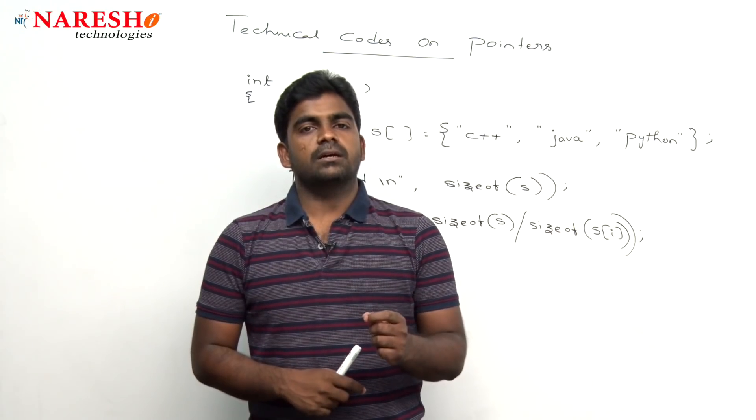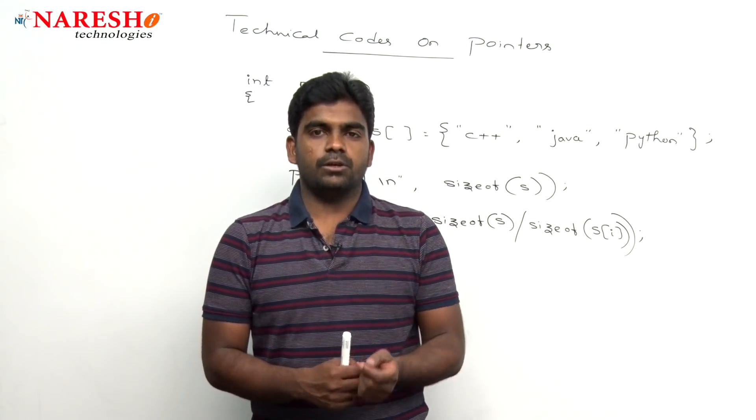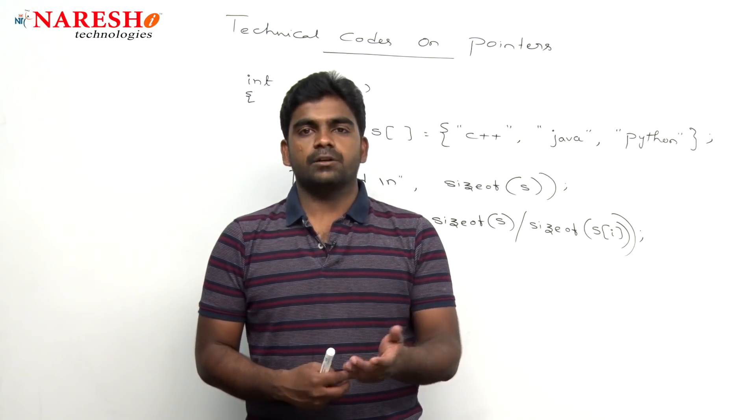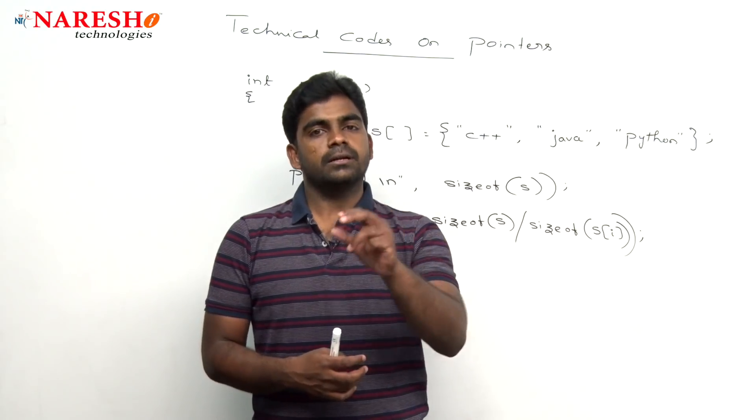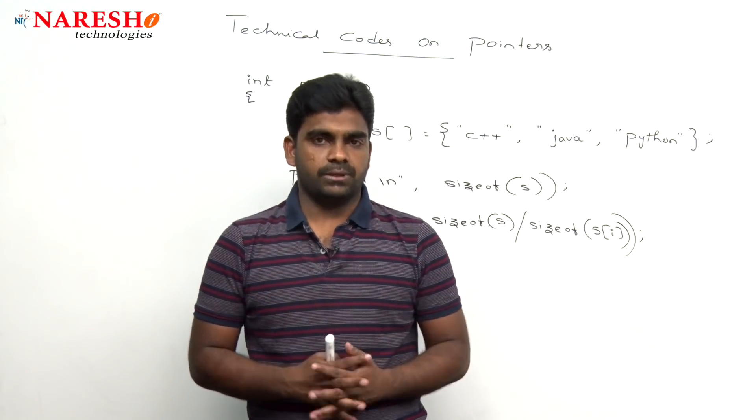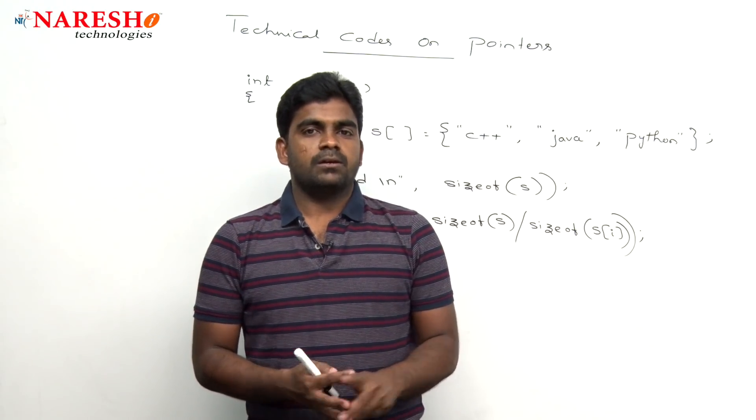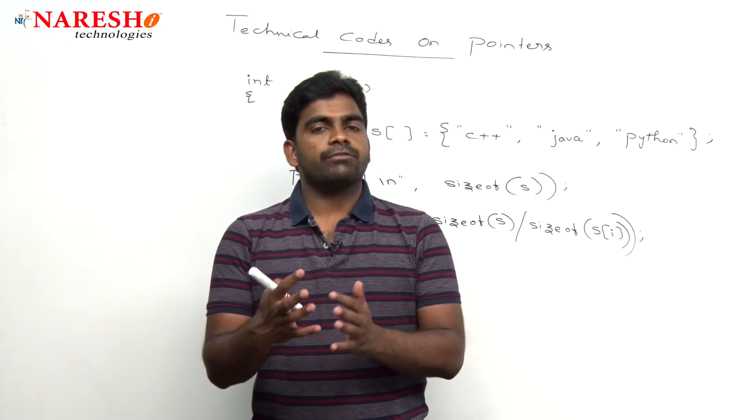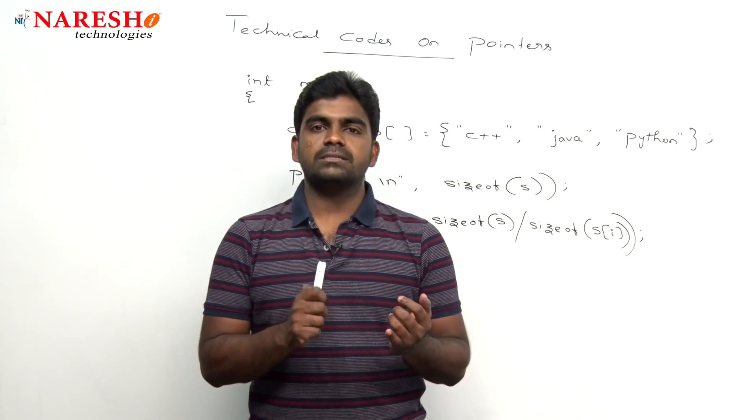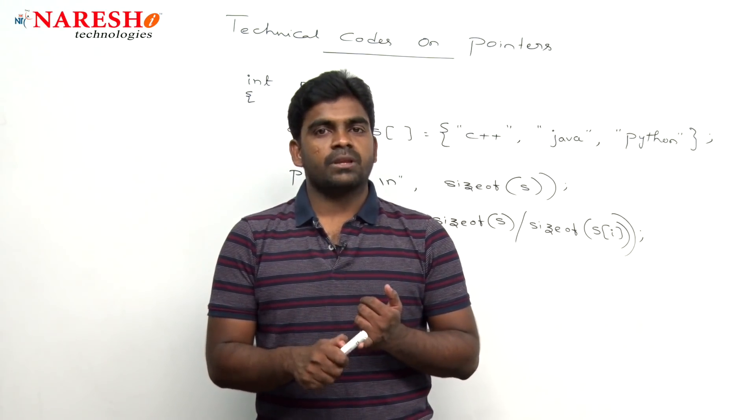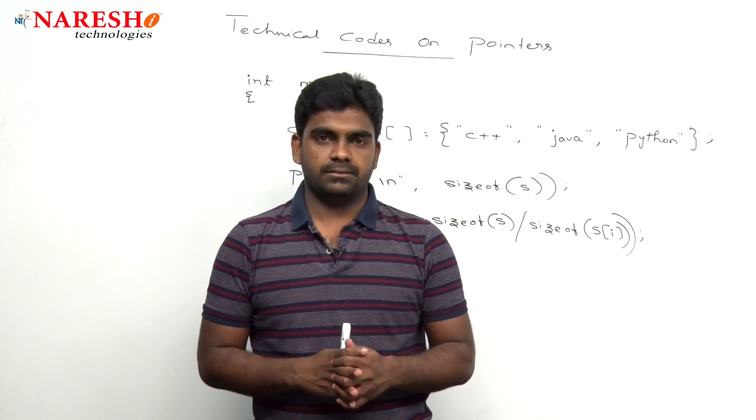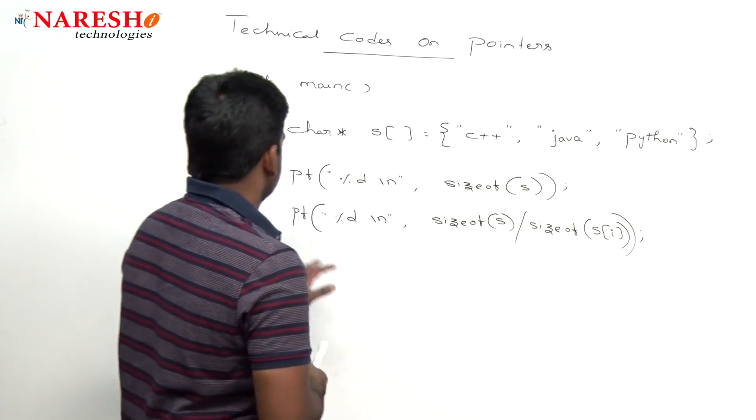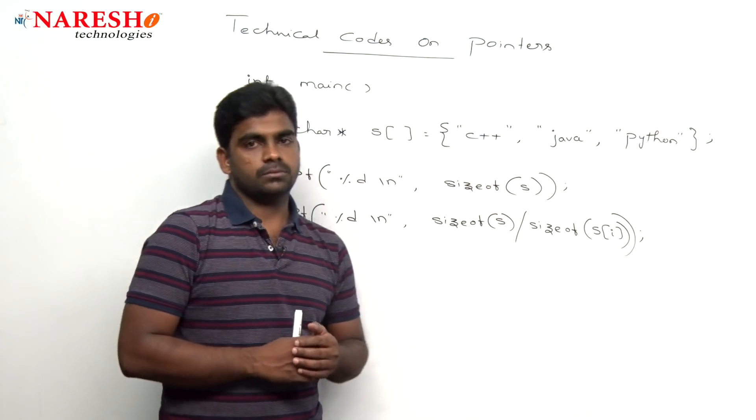We can store more than one string, you can say that array of strings or array of character pointers, because a character pointer represents a string in C language. Now here whenever we are declaring a variable, an array of character pointers, what is the size of array and what is the size of element in that array is nothing but string. So this is the simple code that we are going to check.